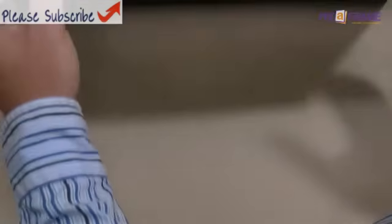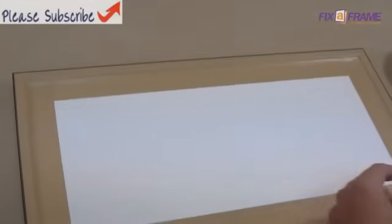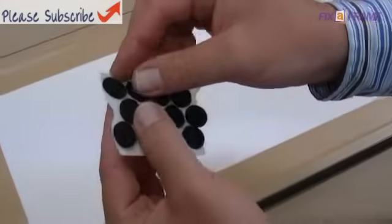I then turn it over just to check which way up it is, and it's going to hang this way on the wall. So on the opposite corners there, I place two small felt bump-ons.